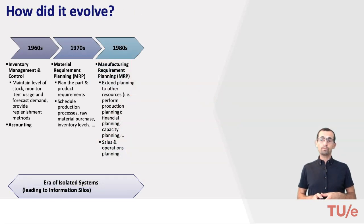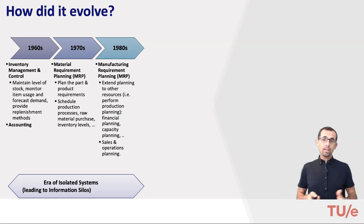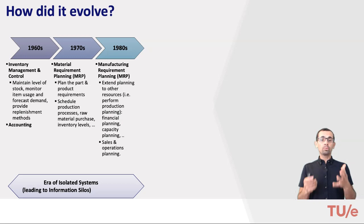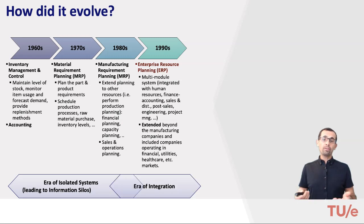Bringing back the evolution chart: the issues with information silos led to a need for an integrated system that would coordinate business processes and share common data across the enterprise. So the industry met with such a system in the late 1980s and called it Enterprise Resource Planning, or ERP systems. Hence the new era started — the era of integration.